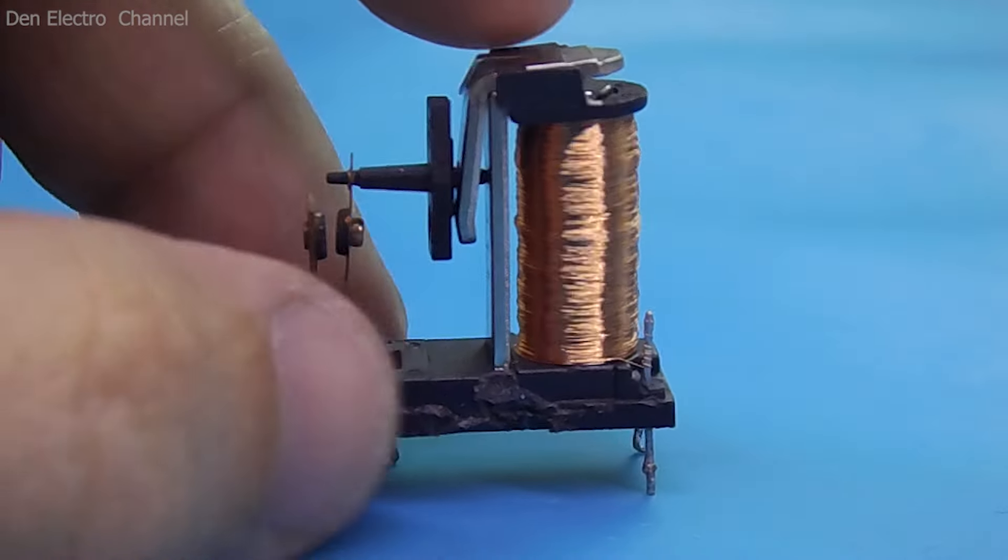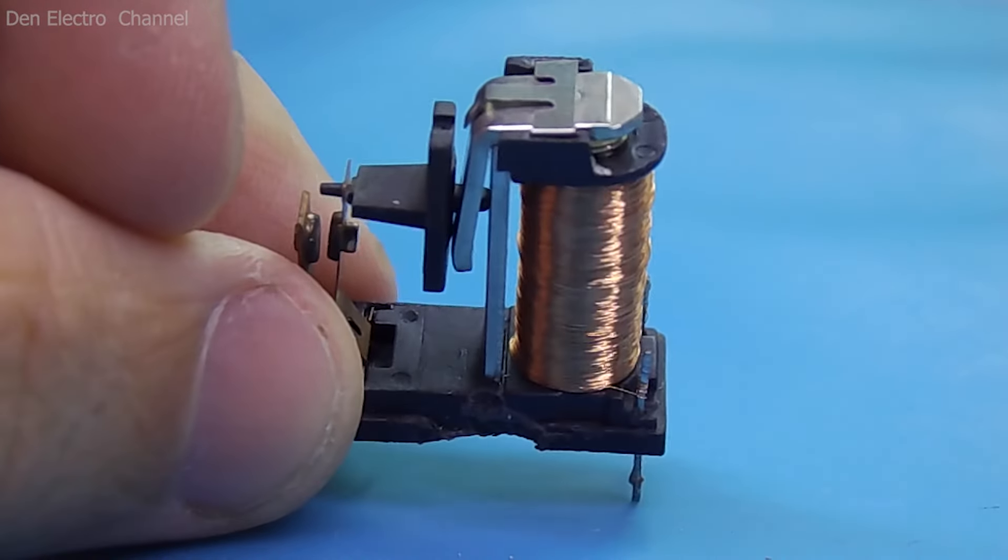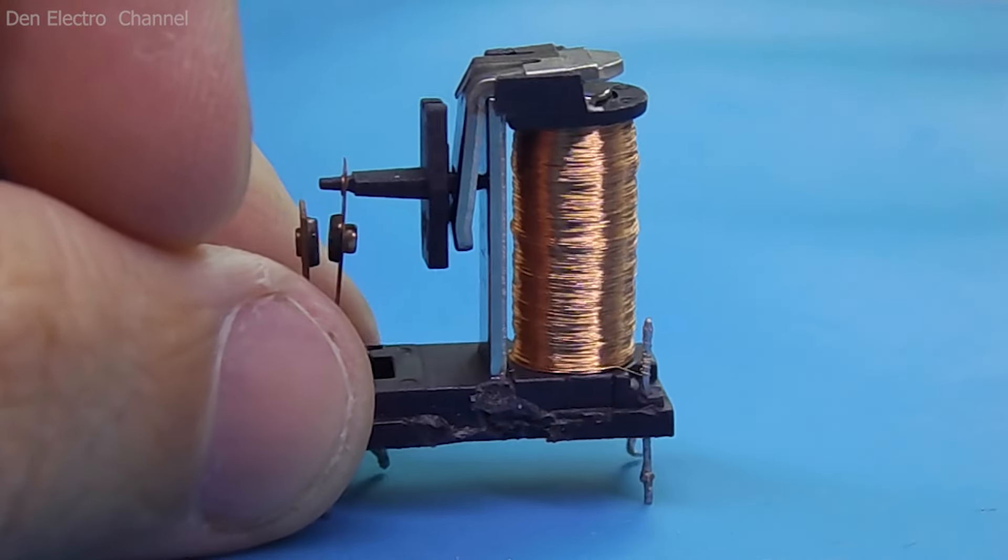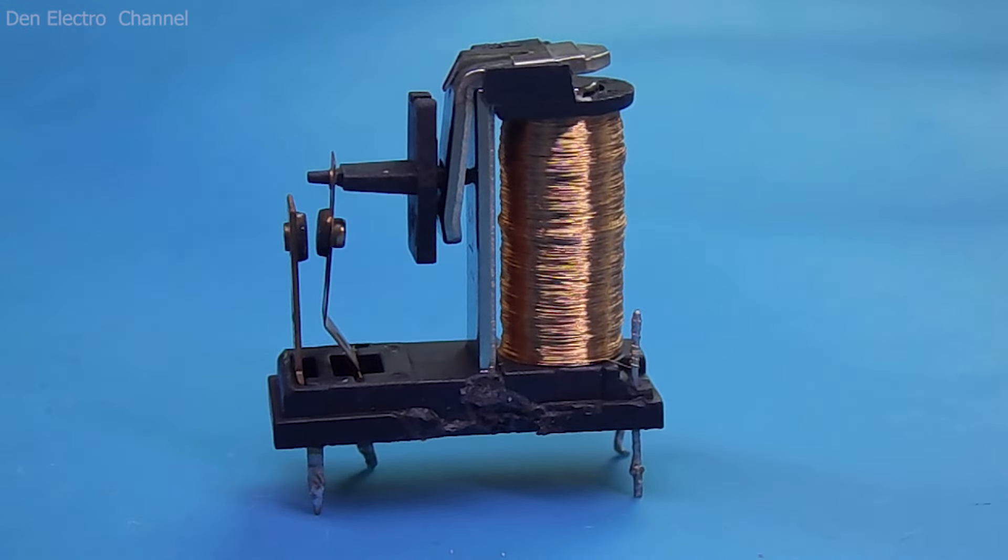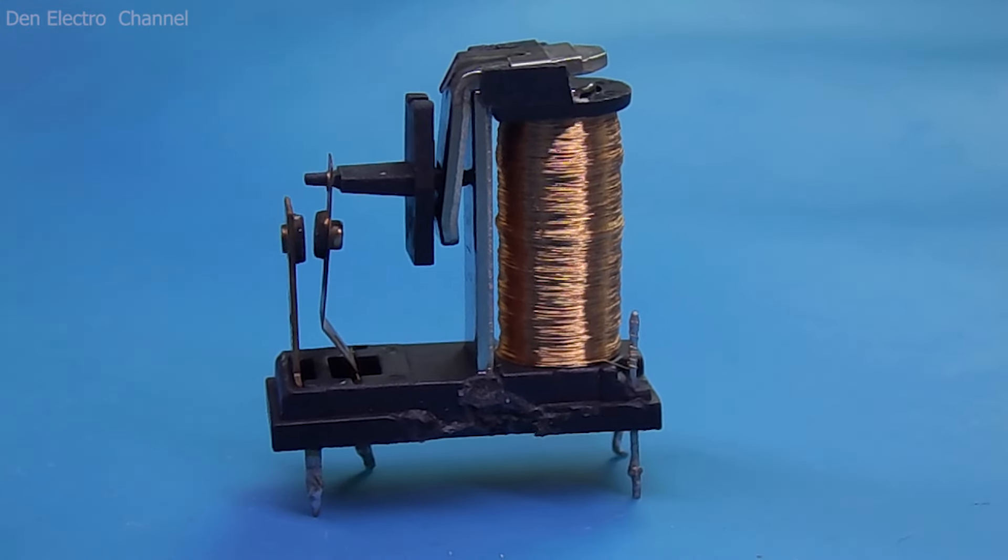If the voltage supplied to the coil is low, for example 12 volts, then you can do it this way. But if the voltage is high, then this method will no longer work. Let's figure out why.